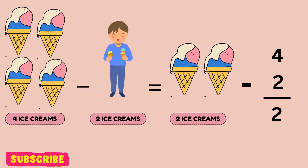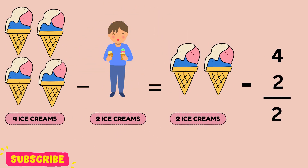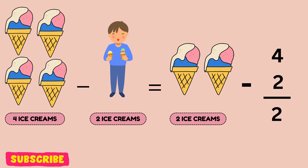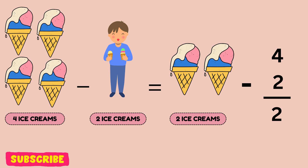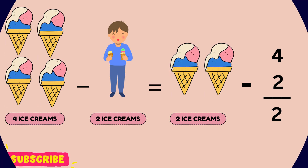There are four ice creams. Andrew ate two ice creams. Let's count how many ice creams are left. One, two — two ice creams left.